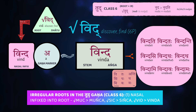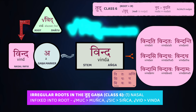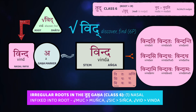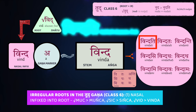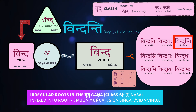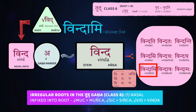Similarly, there's the root vid. There are two different roots of vid: one means to know something, another means to find out, discover, or acquire something. If the meaning is the former, it's actually a class two root — vid becomes vetti: she knows, he knows. But if the meaning of the root is to find, discover, or acquire something, then it's a sixth class verb featuring that infixed nasal again. The stem becomes vindati with the a-marker added, giving: vindati — she discovers; they discover; I acquire something.